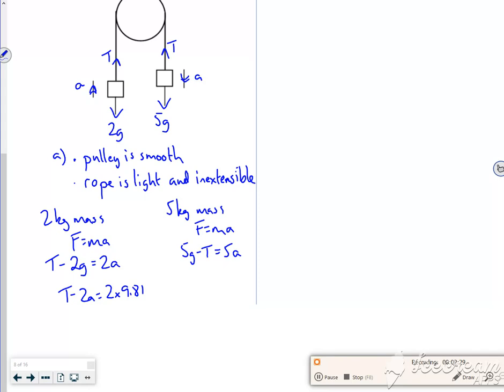So I do a bit of a rearrange, and I've got t plus 5a is equal to 5 lots of 9.81.